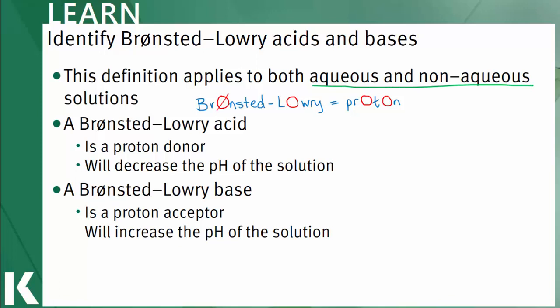A Bronsted-Lowry acid will donate a proton in solution and therefore decrease the pH since pH is inversely proportional to the concentration of hydrogen ions. Remember that a hydrogen ion is just another term for a proton. This relationship between hydrogen ions and pH is covered in another video.